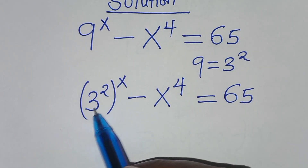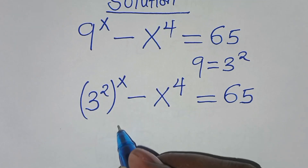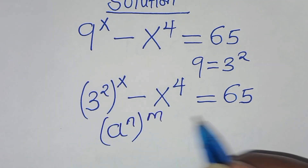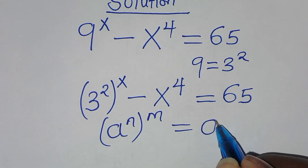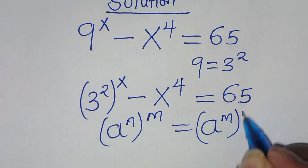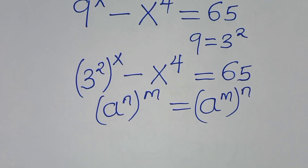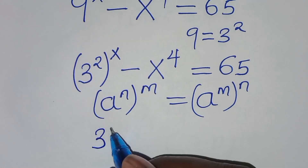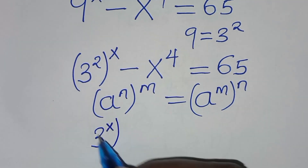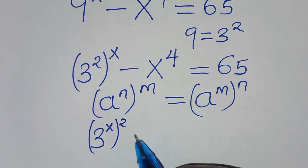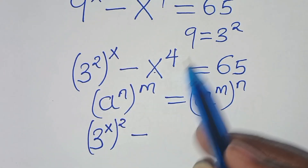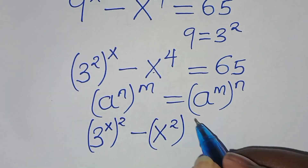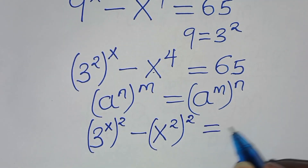The next step is that 3 to the power of 2, raised to power x, this is in the form of a to the power of n, raised to power m, which we can express as a to the power of m, raised to power n. Applying this exponent property, then this implies we have 3 to the power of x, raised to the power of 2, minus x to the power of 2, raised to the power of 2, this is equal to 65.